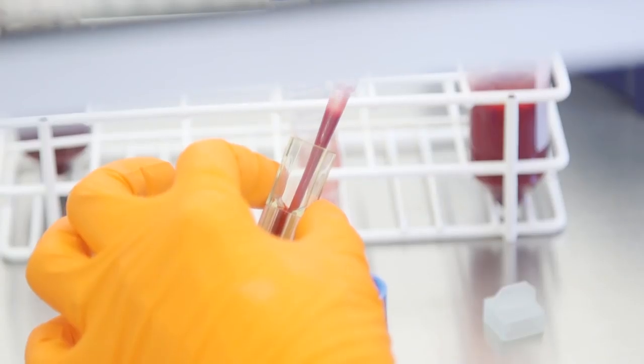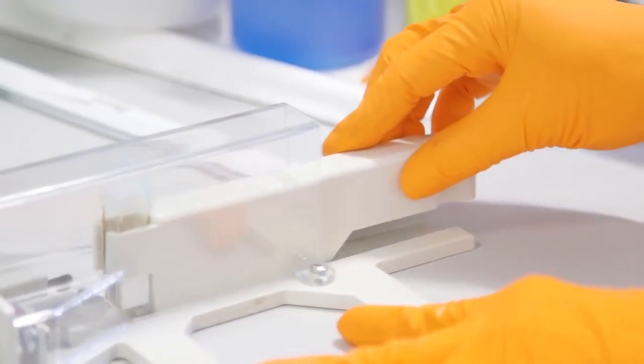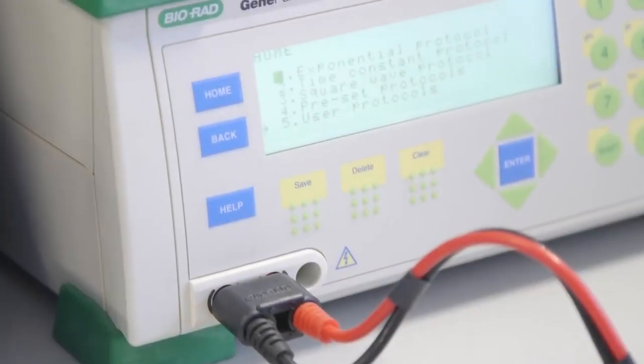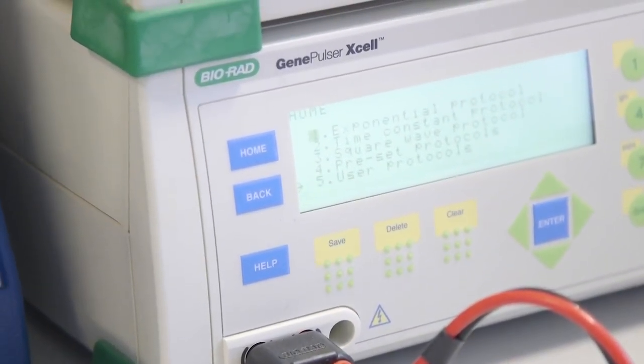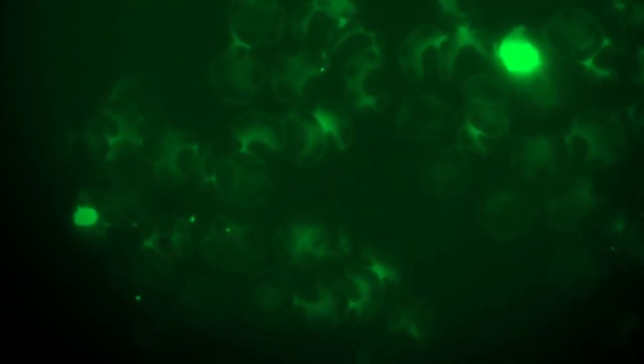We genetically modify the parasite to knock out or modify certain genes to assess whether they're involved in the disease. We also introduce fluorescent proteins into the parasite to follow it throughout the infection and assess its ability to invade particular red blood cells.